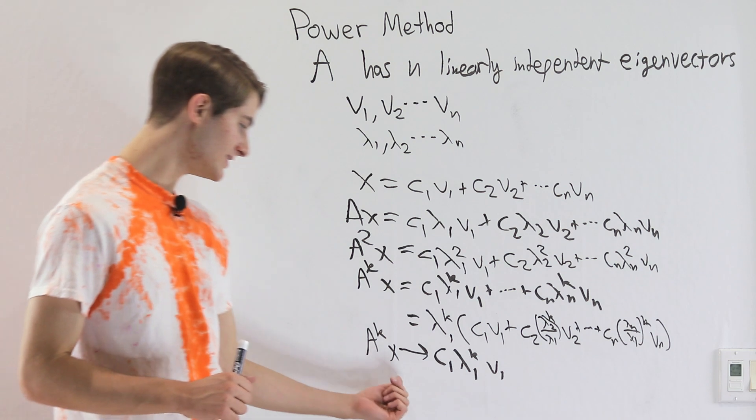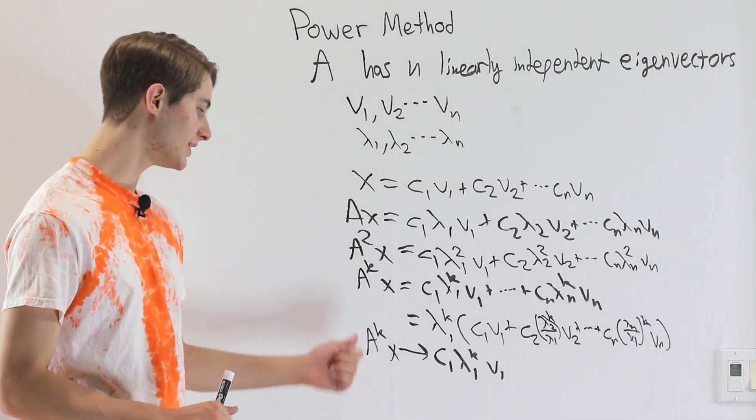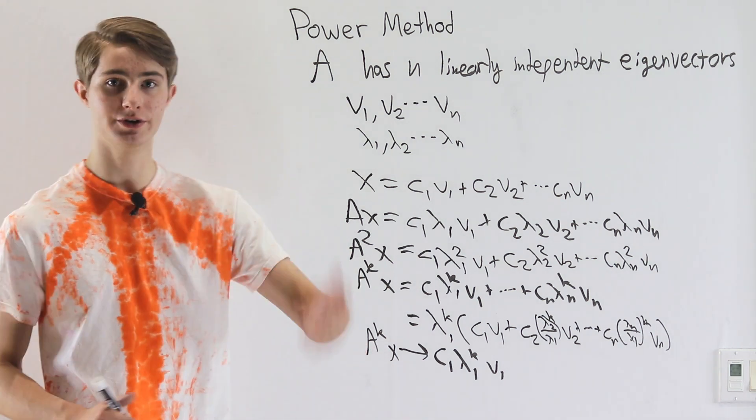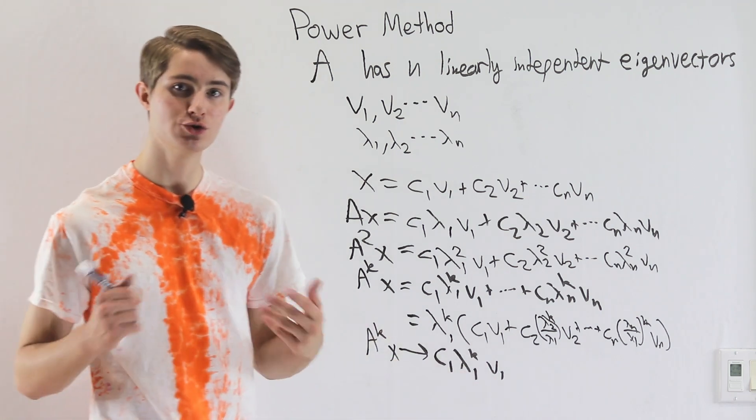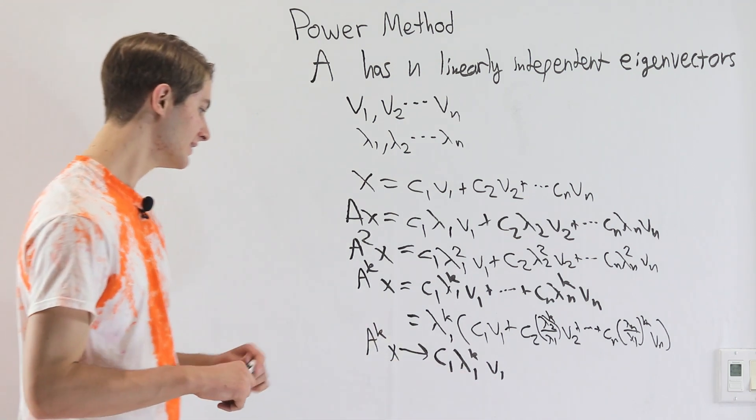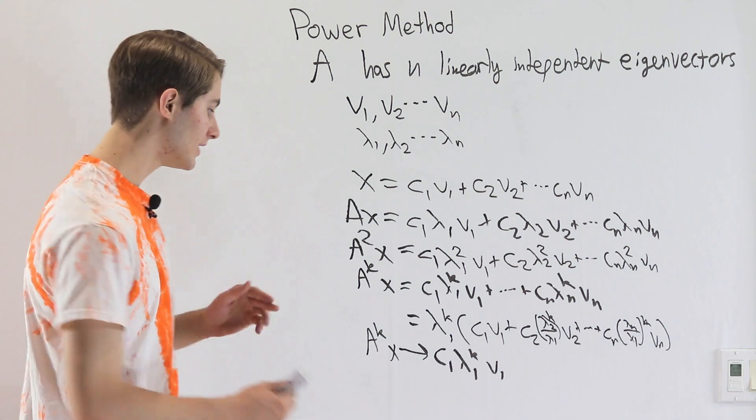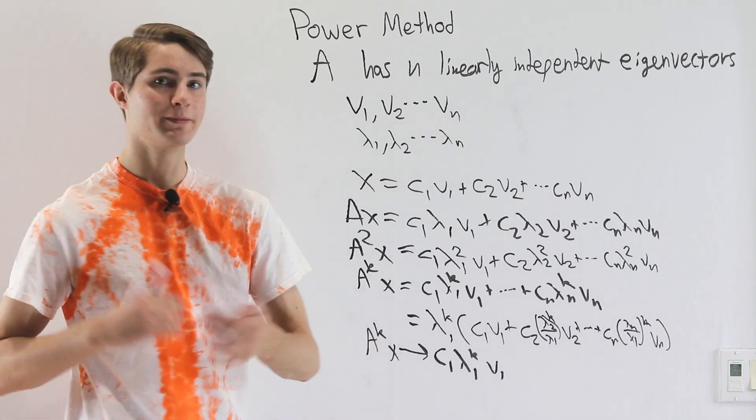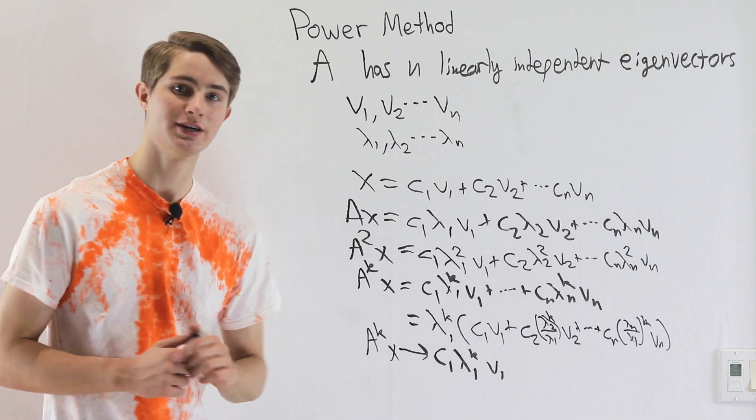So what this means is that just by taking some random vector x and applying the matrix A over and over and over again, we will eventually approach an actual eigenvector of the matrix A, which is pretty awesome. Now obviously we don't want to keep multiplying by the matrix A over and over by hand, that takes a really long time.